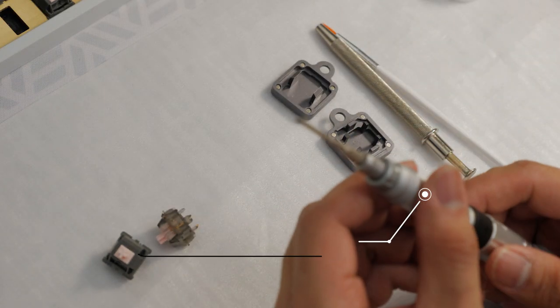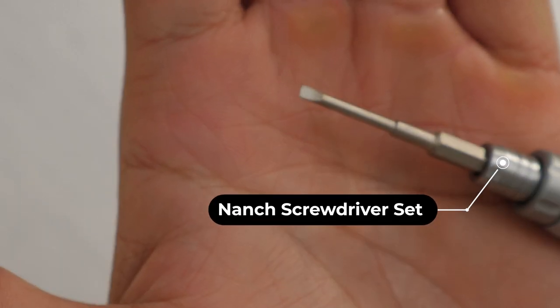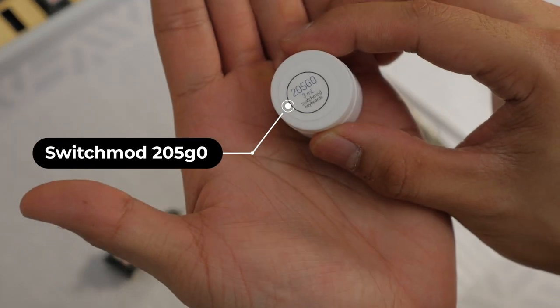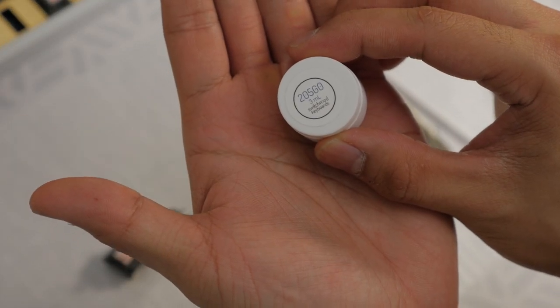If you don't have a switch opener, you can open switches with just a flathead screwdriver, just that little tip. Of course the lube, 25G0. This is from Switchmod.